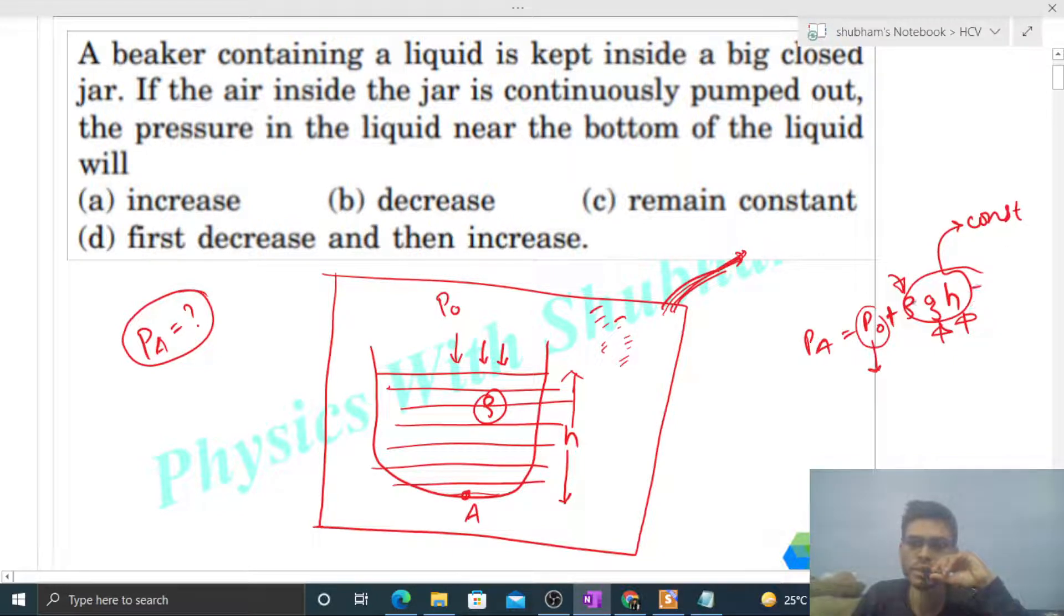ρgh will be constant—ye constant hoga na. h bhi constant, density of liquid constant, g constant. So p₀ continuously decrease hoga. It means jo pA hai, wo bhi continuously decrease hoga. So I think you have understood.